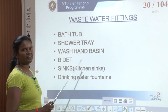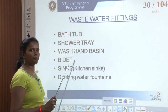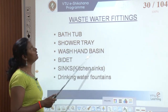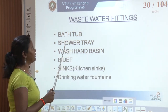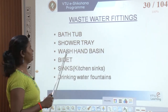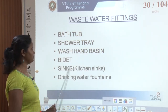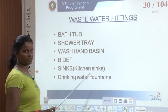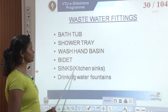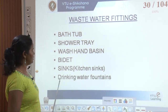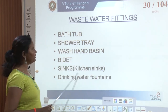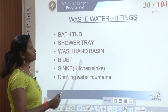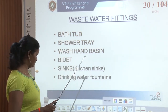Then we have waste water fittings. The earlier fittings — water closets and urinals — were all soil fittings. In waste water fittings we have bath tub, shower tray, hand wash basin, bidet, and sinks — that is kitchen sink. We also have drinking water fountains. All the water generated from these comes under wastewater, so these fittings are called wastewater fittings.